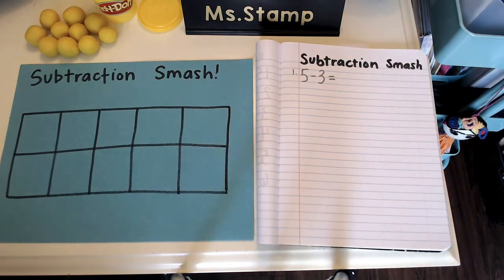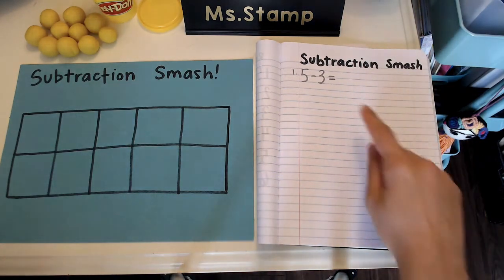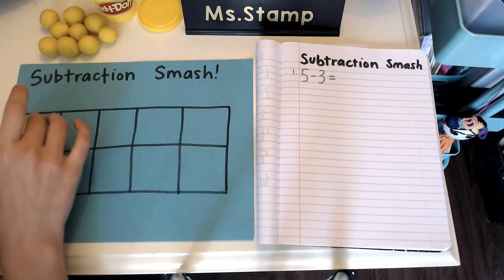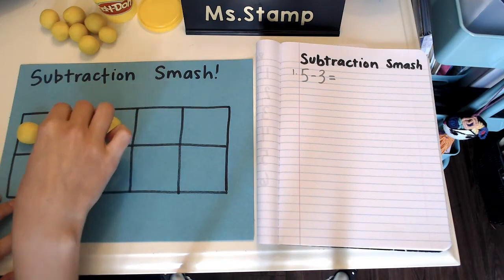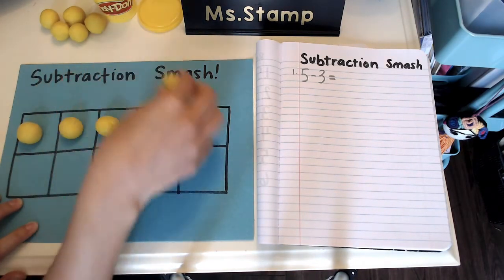We're going to start with the number five and we take away three to see how many we have left. If you're using play-doh, you're going to start with a number five in your 10 frame. So I'm going to put five balls of play-doh: one, two, three, four, and five.